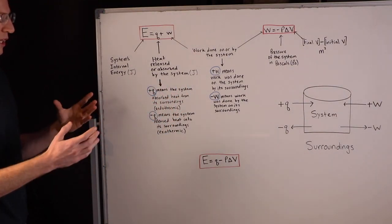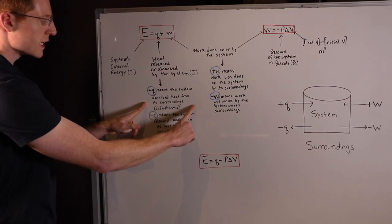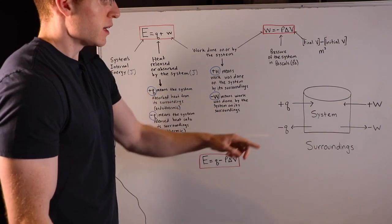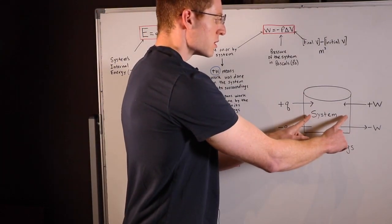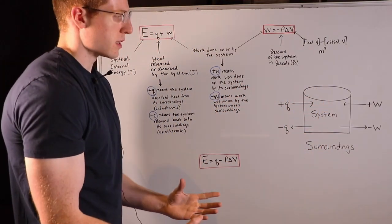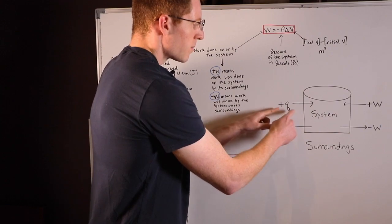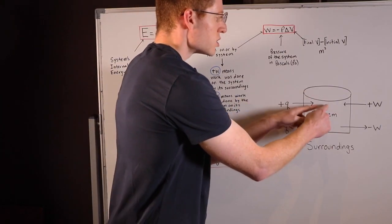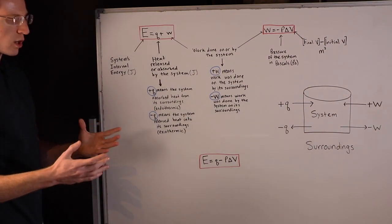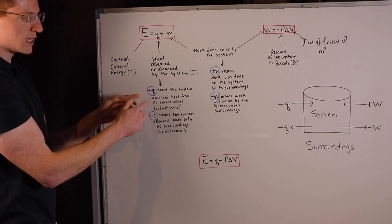So in particular, a positive Q means the system absorbed heat from its surroundings, and I've illustrated that right here. If we define this system to be what's inside this beaker, and then the surroundings are everything else in the universe, a positive Q means heat was transferred from the surroundings into the system. That is a positive Q, and we have a special word for that process. We call that an endothermic process, or heat going in.